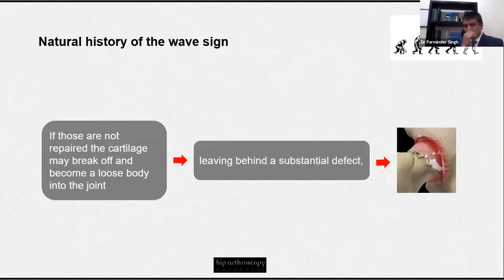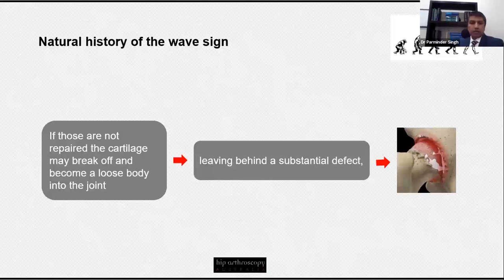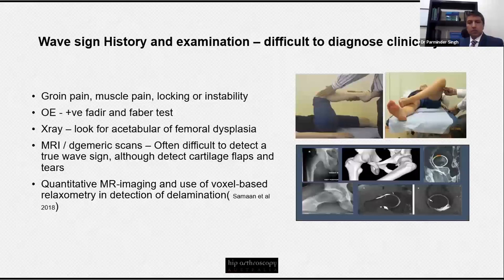The natural history of a wave sign, if left untreated: the cartilage delamination compromises mechanical strength, making it more prone to breaking off into a loose body, effectively leaving a substantial defect and leading to premature arthritis. So we need a strategy to diagnose and treat this early.